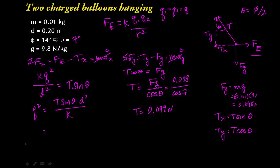And if we plug some numbers in here, that's going to give us 0.099 times the sine of seven degrees times 0.2 meters squared, divided by Coulomb's constant of nine times ten to the ninth. And that is going to equal 5.4 times 10 to negative 14 coulombs squared.